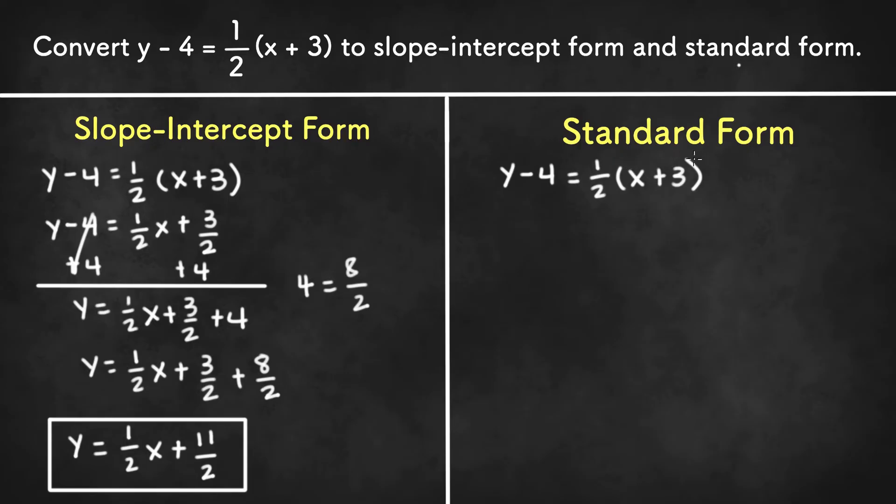And since standard form has no fractions or decimals, we can get rid of this 1/2 by multiplying both sides by 2. So if we multiply both sides by 2, we have 2y minus 8, since 2 times 4 is 8, equals—and the 1/2 and 2 cancel out and we're left with 1 times (x plus 3), or just x plus 3.